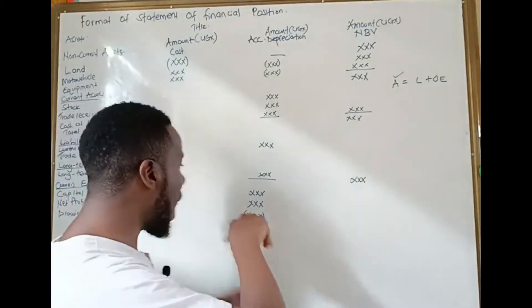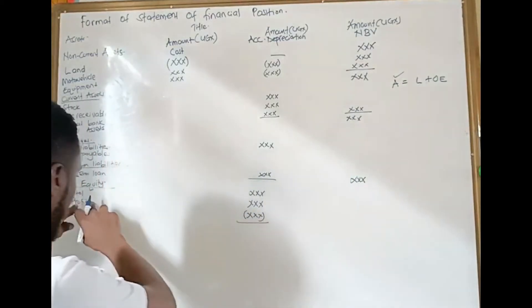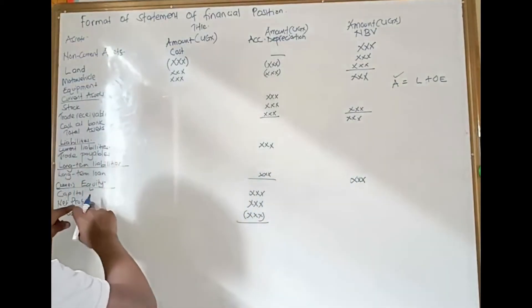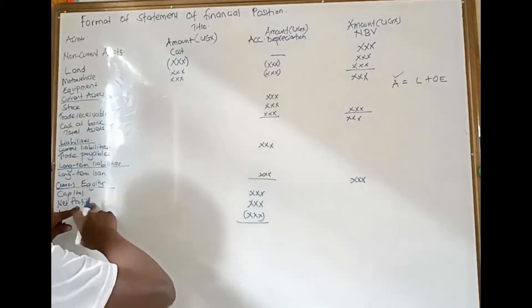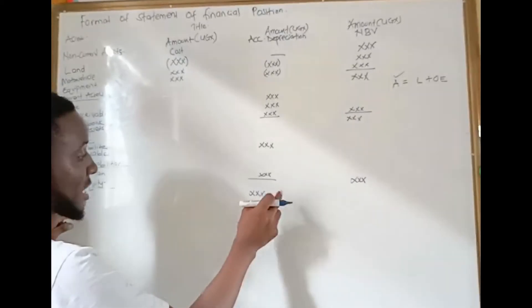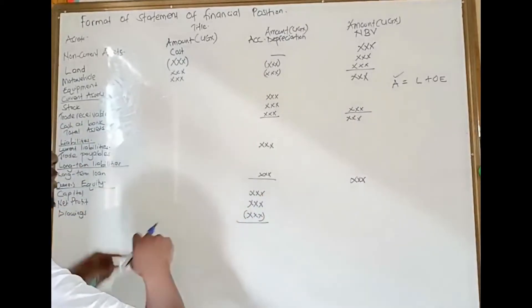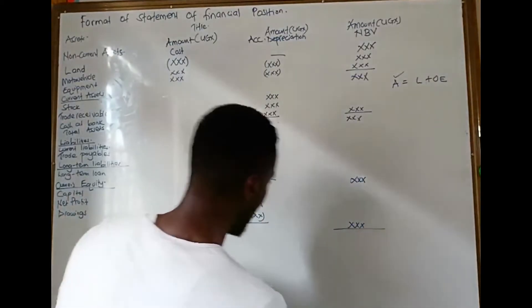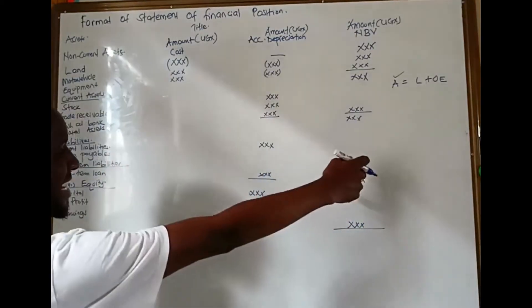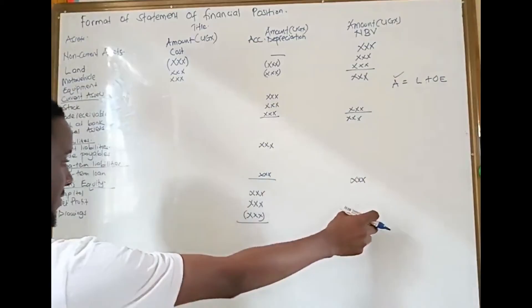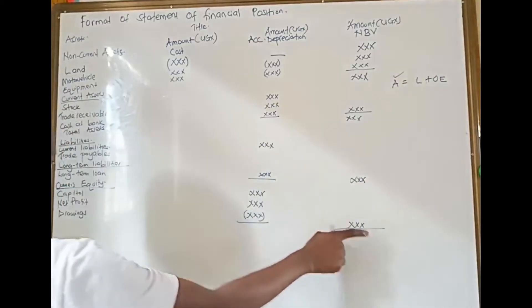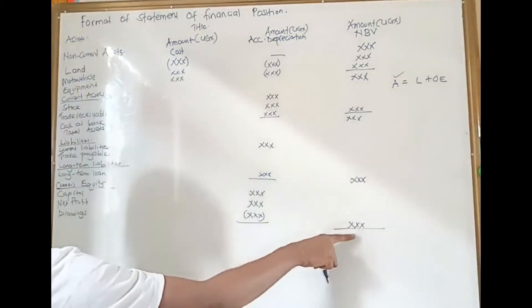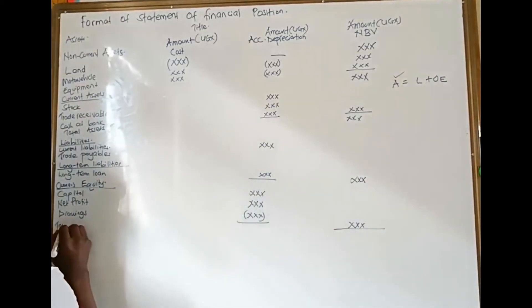If it was a net loss we would have subtracted it, but since it is net profit we add it. We then get the total owner's equity. When we add total liabilities plus total owner's equity, we get total liabilities and owner's equity.